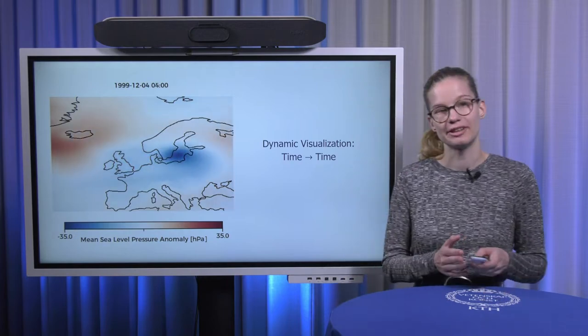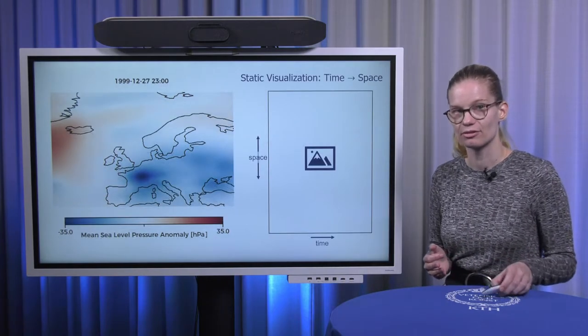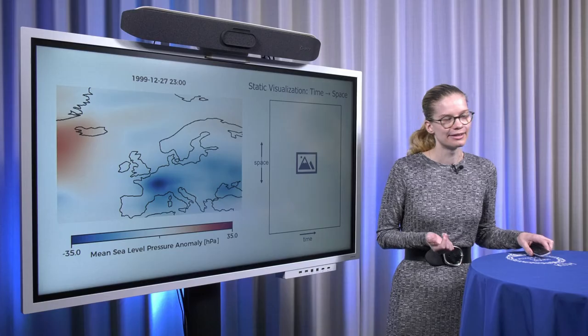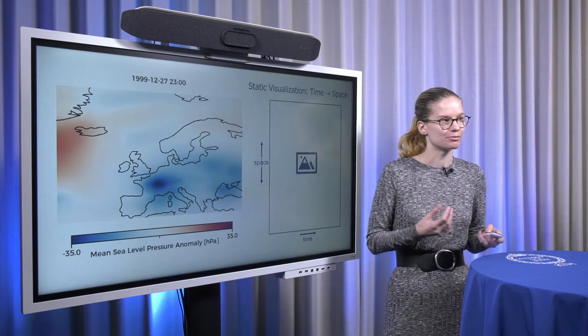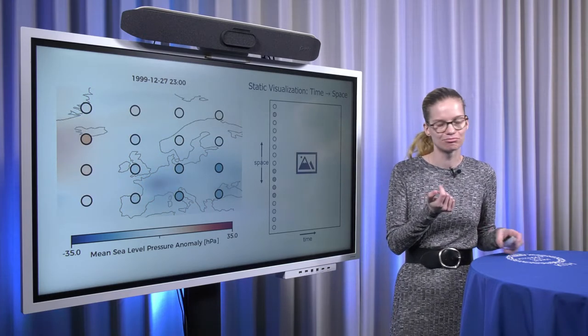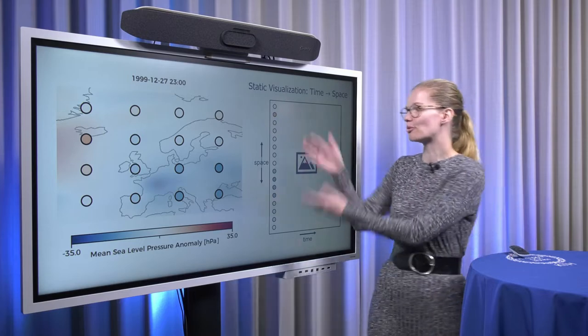And that would be a static visualization where we can see the entire time in one image. Now if we have only an image available, then we may use one dimension for time and the other dimension we would need to fit all of the spatial data into. And that means that we need to take all of the data points that we have and somehow map them into one dimension.